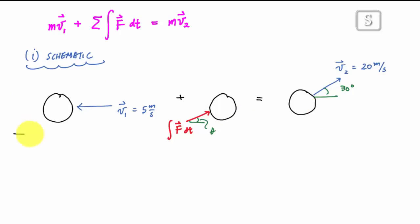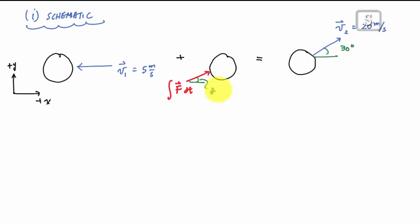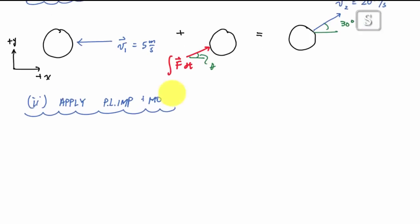I'm going to establish a coordinate system. I'm going to say this is my positive x direction or my positive horizontal, and my positive vertical direction is upwards. And so now I'm just going to go ahead and apply the principle of linear impulse and momentum or PLIMP and MO in each component.